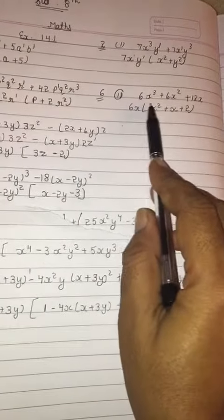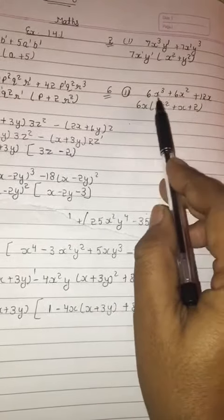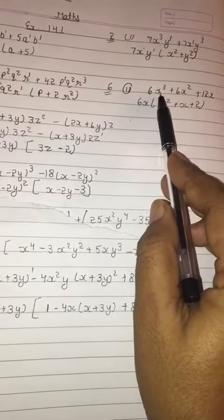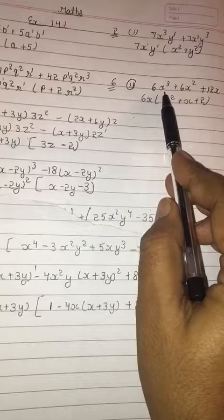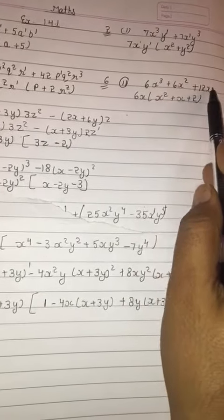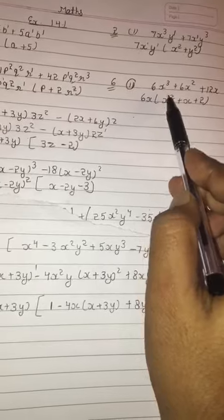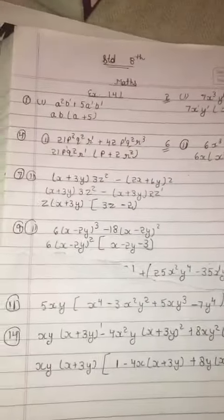Like this way, now they have given you three terms. From three terms, all are divided by six, and what is the common? X. So from here, x cube, x square, and x power 1 - I took x power 1 out. What is left inside: x squared plus x plus 2. So these are simple questions. Now we can see question number 7.